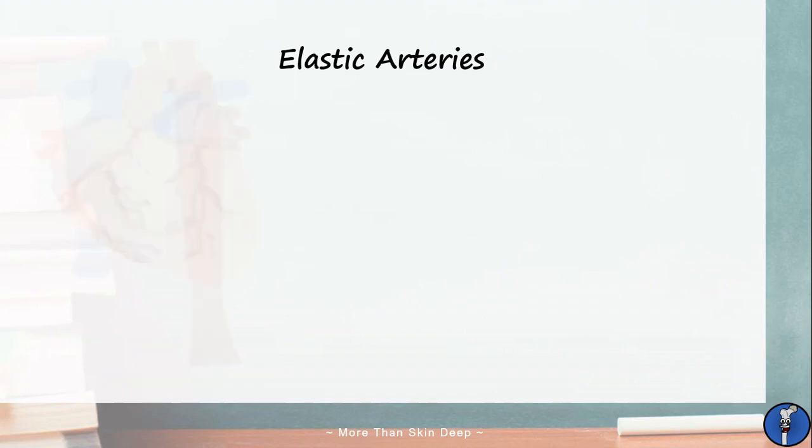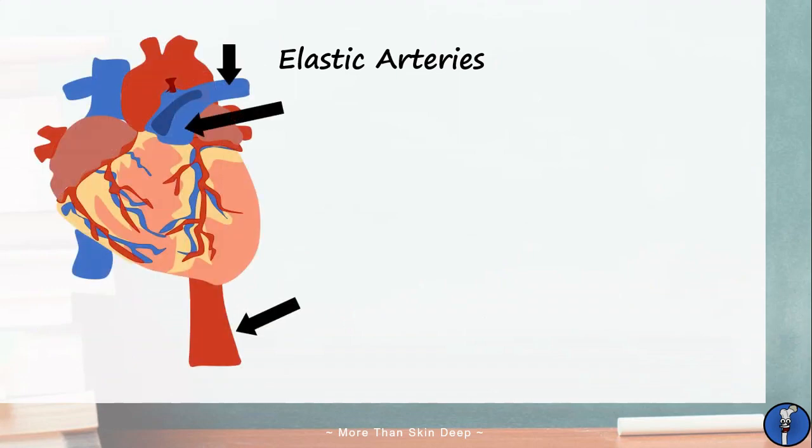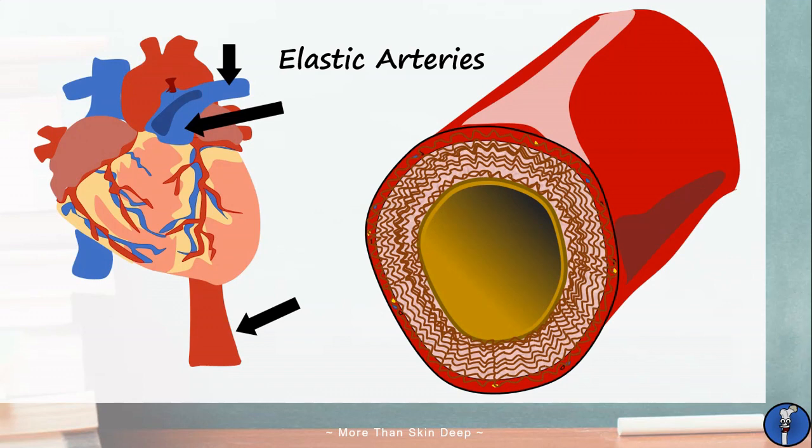Elastic arteries include the aorta, pulmonary artery and its branches. They have a huge amount of elastic tissue in all three tunica layers. So much so that it makes it hard to distinguish the internal and external elastic laminae. These arteries are able to expand a huge amount in order to contain all the blood from each heartbeat. The elastic fibers then recoil during diastole to maintain appropriate blood flow.